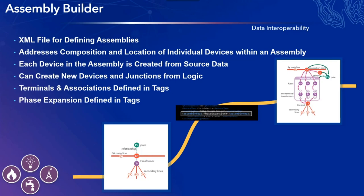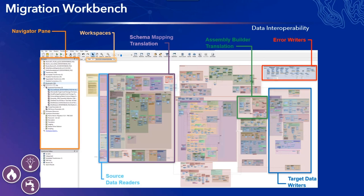Before updating the migration workspace, there is one more possible configuration file to address: the Assembly Builder. If assemblies are something you want to include, there may be upfront work required. The Assembly Builder refers to a combination of an XML file used as a template for defining assembly configurations, and an additional workspace in the migration tool that creates this data. The Assembly Builder addresses the composition and location of individual devices within an assembly feature, derives contained devices from source unit data, creates new devices and junctions from logic defined in the XML file, and sets terminal configurations, associations, and phase expansion based on tags assigned in the workspace. If you wish to include assemblies, this file has a baseline of configurations but may need to be extended depending on your desired output.